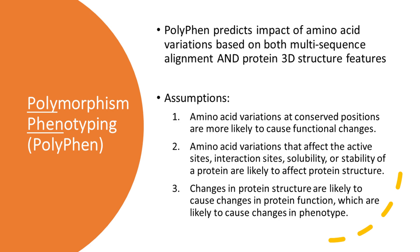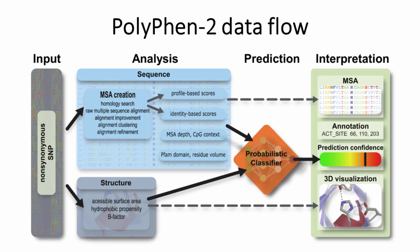The second presumption is that amino acid variations that affect the active sites, interaction sites, solubility, or stability of a protein are likely to affect protein structure. The third presumption is that changes in protein structure are likely to cause changes in protein function, which are likely to cause changes in phenotype.